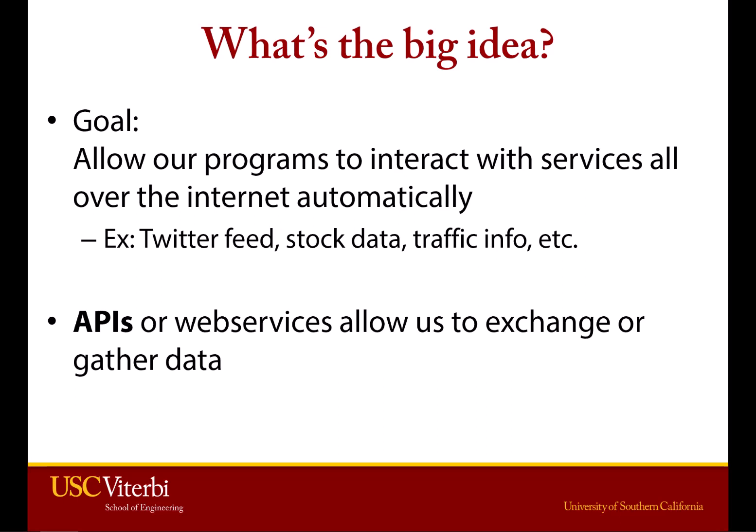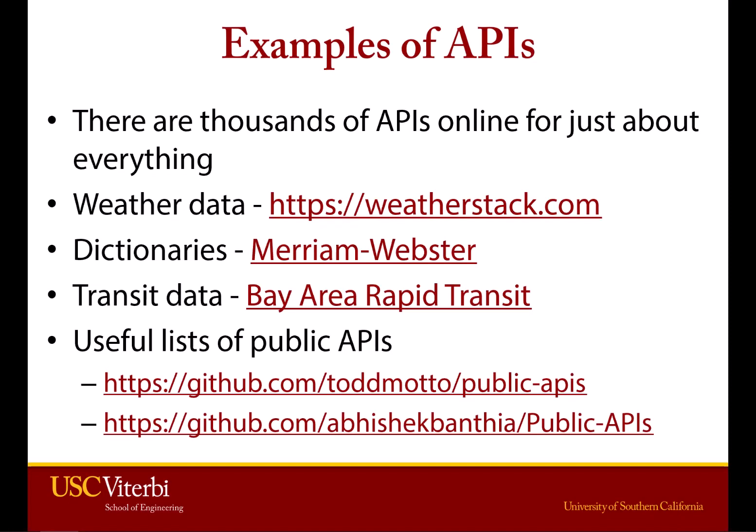There are literally thousands of examples. There's a website that will give you the weather — you send it your zip code, it tells you what the weather is. You can get definitions of words, traffic data, bus data, whatever you might need. Here are a couple of links to check out all kinds of really cool things. Some are free, some are paid, there are lots of them.